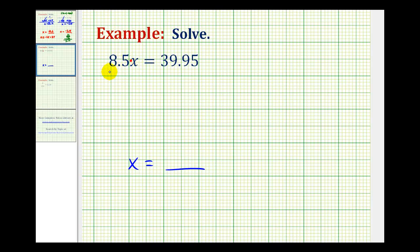If we divide both sides of the equation by 8.5, we have 8.5 divided by 8.5, which equals 1, and 1 times x is x. This isolates the variable x.